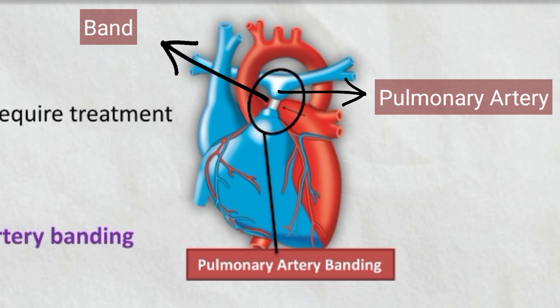The band is tightened, narrowing the diameter of the pulmonary artery to reduce blood flow to the lungs and reduce pulmonary artery pressure, providing symptomatic relief.